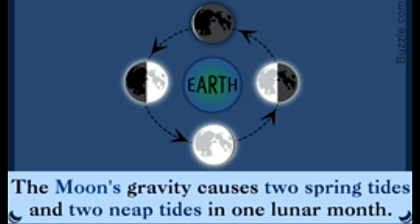Neap and spring tides are a particular type of tides created by simple and fascinating interactions of gravity. Did you know? The spring in spring tides refers not to the season, but the action of springing forth.